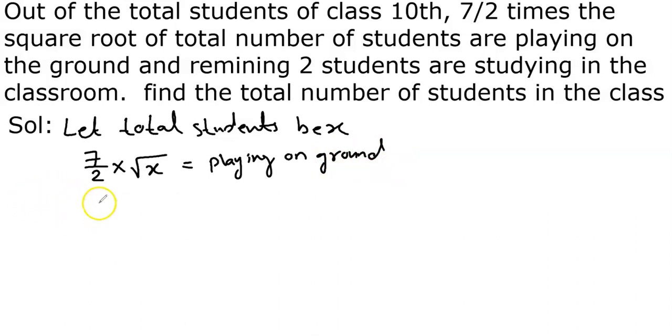Or kya likha hai? Two students. Ye kaun hai? Jo study kar rahe hain. Two students are studying. Okay? To jo ground pe hain aur jo study kar rahe hain, dono mila ke total bachche hain. To likhenge by the condition: 7 upon 2 root x plus two students jo class mein study kar rahe hain equals x.